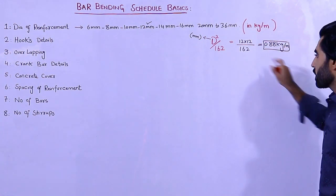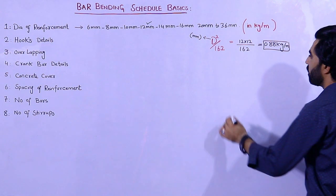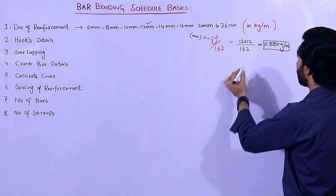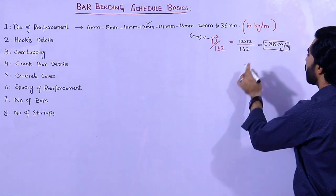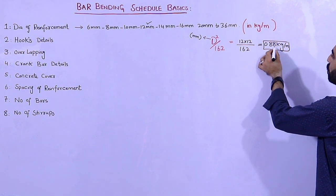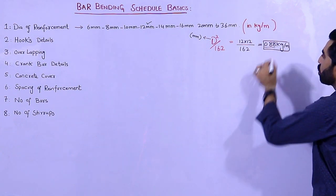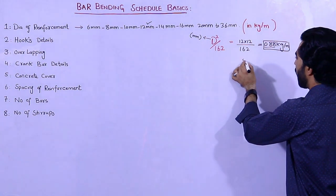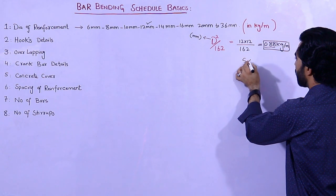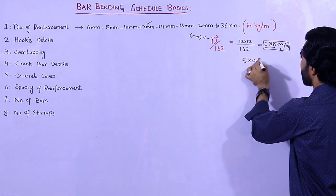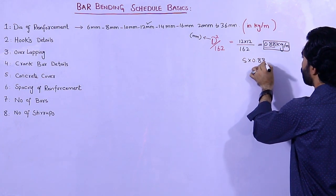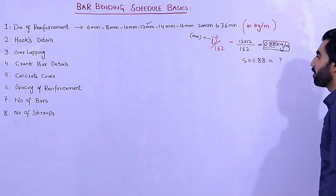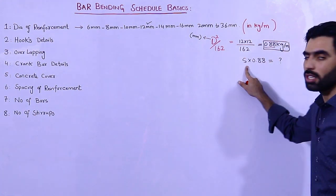Suppose you want to find the total weight of a steel rod. For 12mm we have the unit weight 0.88 kg per meter, so for a 5 meter rod multiply 5 by 0.88 kg and you will find the total weight for 5 meters of steel rod.